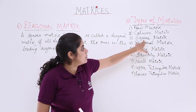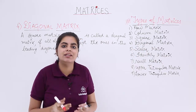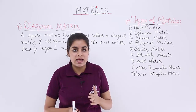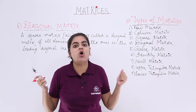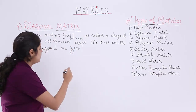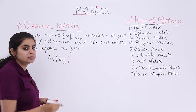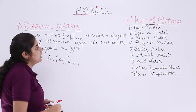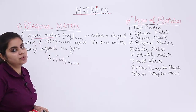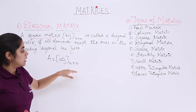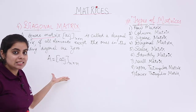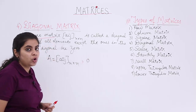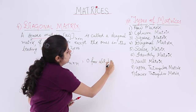A diagonal matrix is basically an extension of, or related to, the square matrix only. The elements in the leading diagonal are non-zero; the rest are all 0. That means if we have a matrix A denoted as aij of order n by n, it is a diagonal matrix when the condition aij = 0 for all i not equal to j is satisfied.